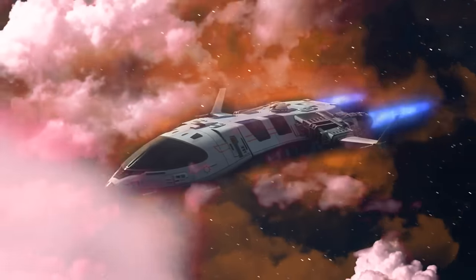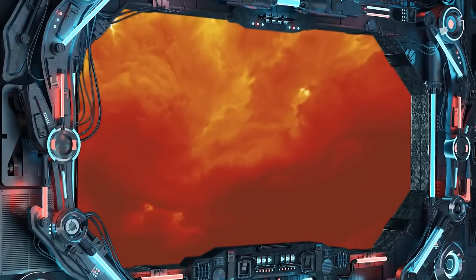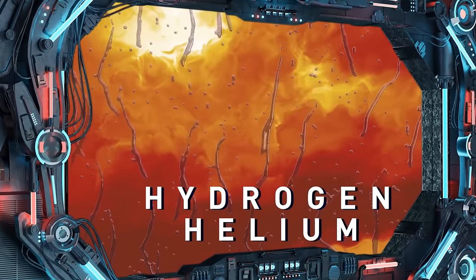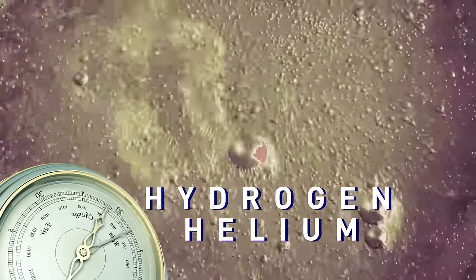If you continue descending toward the center of the planet, you'll see its atmosphere, mostly made up of hydrogen and helium gas, becoming liquid. It happens because of immense atmospheric pressure.